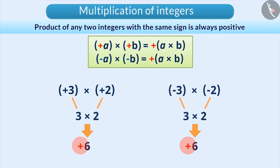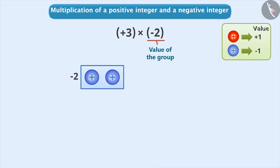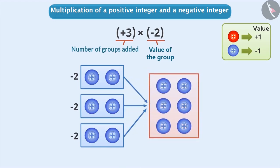Now, let's understand the multiplication of a positive integer and a negative integer. We will understand this by finding the value of plus 3 into minus 2. Here, the second number is minus 2, which represents the value of the group. Therefore, we need to make a group of two blue buttons. Since the first number is plus 3, we need to add three such groups. By doing so, we will get six blue buttons whose value is minus 6. Thus, plus 3 into minus 2 is equal to minus 6.